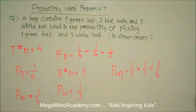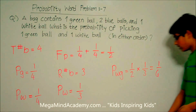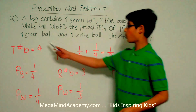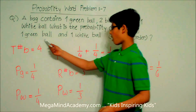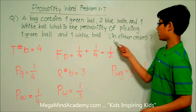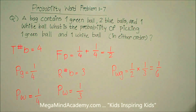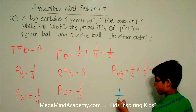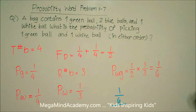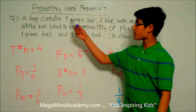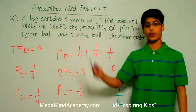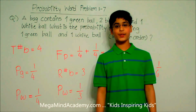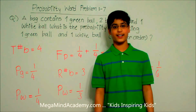So the probability of picking one green ball and one white ball in either order is one sixth. Today we learned about probability word problems. Thank you for watching this video.